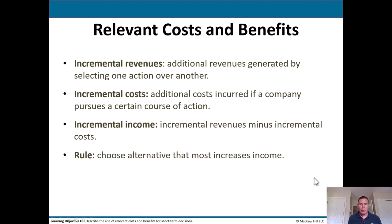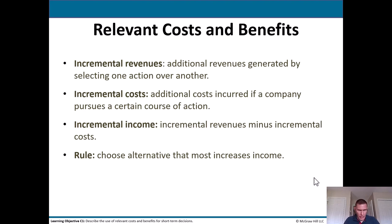Let's talk about relevant costs and benefits. Incremental revenues are additional revenues generated by selecting one action over another. Incremental costs are additional costs incurred if a company pursues a certain course of action. Incremental income is incremental revenues minus incremental costs, and the decision rule is to choose the alternative that most increases income.